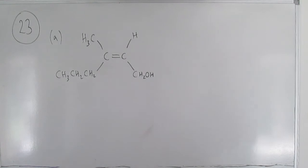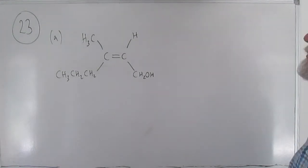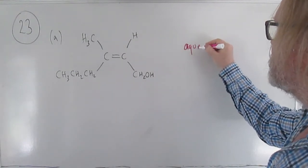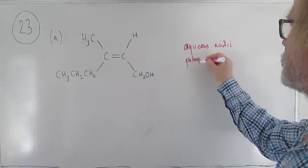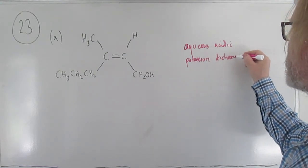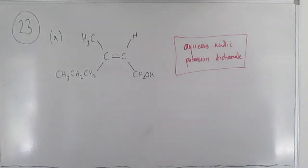In part B, it's asking about oxidising the alcohol group in compound E. This is a primary alcohol, so remember there are two possible products: brief oxidation gives the aldehyde, or prolonged oxidation gives the carboxylic acid. It wants the reagent first, and remember it's aqueous acidic potassium dichromate — learn the whole package. Don't just say potassium dichromate; it doesn't work unless it's dissolved in aqueous solution with plenty of acid as well.